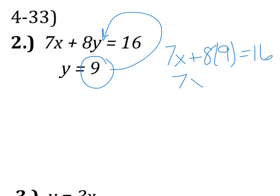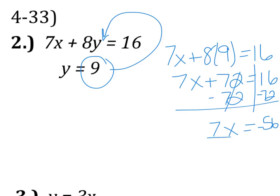So we have 7X plus 72 equals 16. We will solve like normal, so we'll bring 72 over, we'll subtract. So we have 7X equals negative 56, and we'll divide both sides by 7 to get X is equal to negative 8.